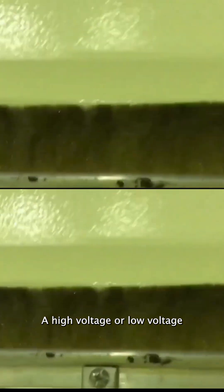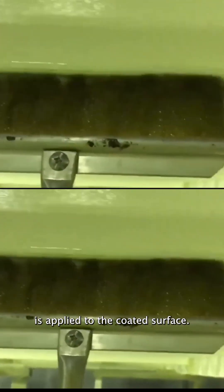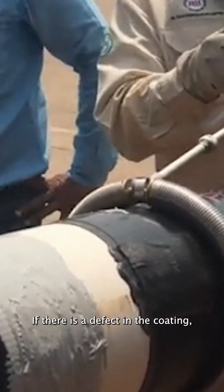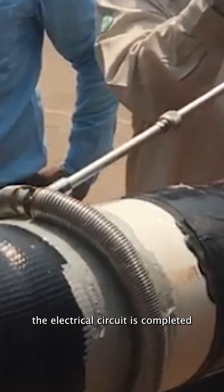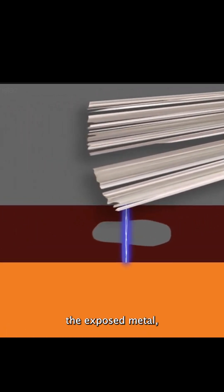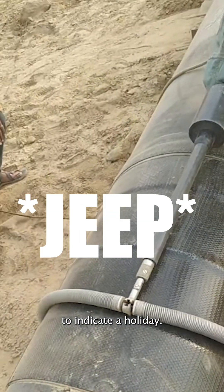A high-voltage or low-voltage electrical current is applied to the coated surface. If there is a defect in the coating, the electrical circuit is completed when the test instrument contacts the exposed metal, triggering an alarm or spark to indicate a holiday.